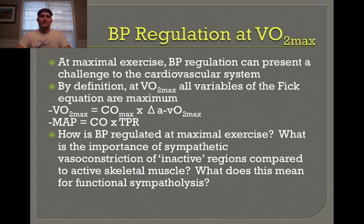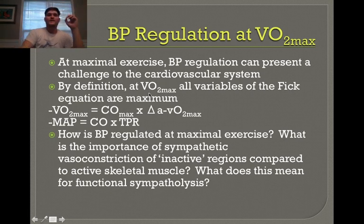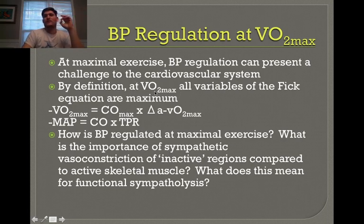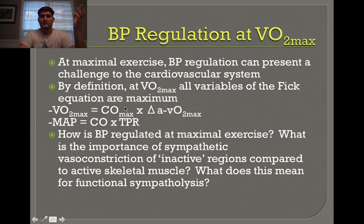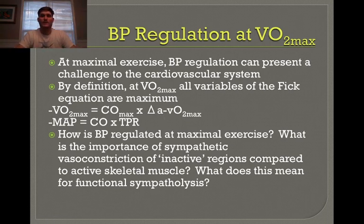At maximal exercise, blood pressure regulation presents a challenge to the cardiovascular system. To understand why, we start by defining VO2 maximum: when VO2 is at its max, all variables of the Fick equation are at their maximum. That means cardiac output is at its max and the a-vO2 difference is at its max. We're trying to deliver as much blood as possible to working skeletal muscle and extract as much oxygen from that blood as possible.